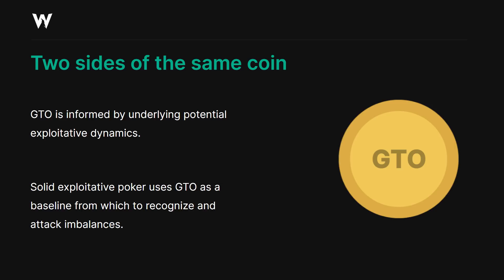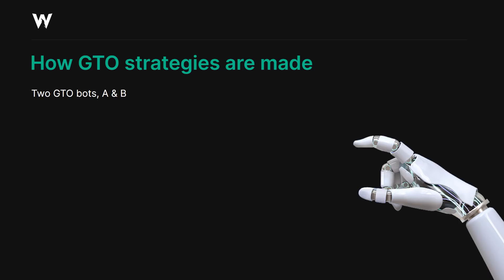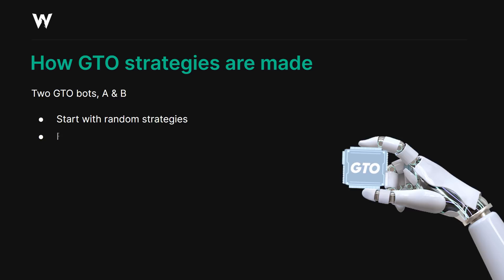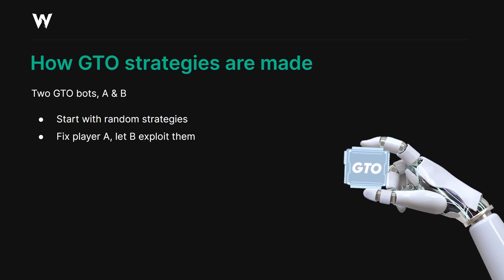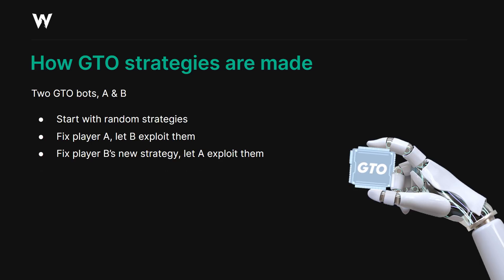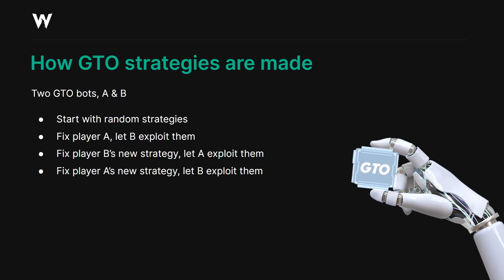We need to understand how GTO strategies are made, and this is important to understanding what I mean by underlying potential exploitative dynamics. Start with two bots — bot A and bot B — and give them completely random strategies. They'll just pick every action at an equal frequency with every hand, no regard for strategic poker at all. Now, we're going to fix player A's strategy — lock that strategy in place so they can't adapt — and let player B exploit that fixed random strategy. Then we fix player B's new exploitative strategy and let player A exploit that. We repeat this cycle over and over until we approach Nash equilibrium.